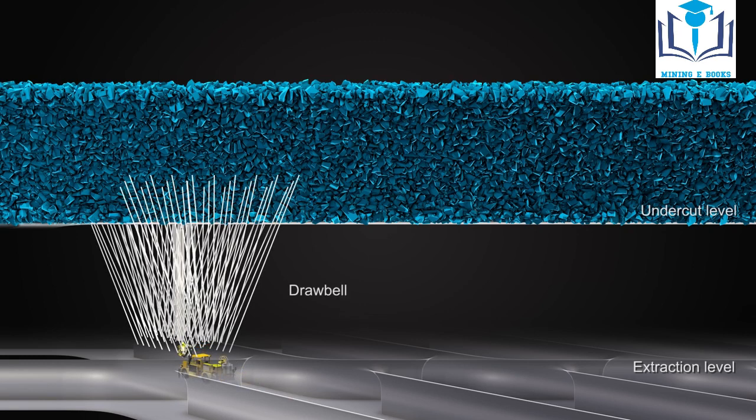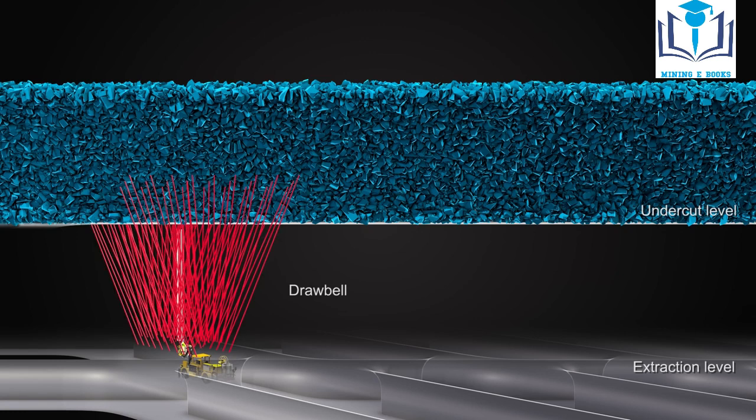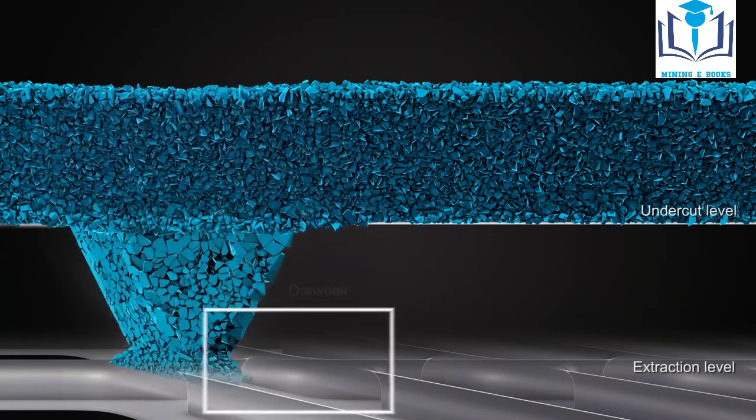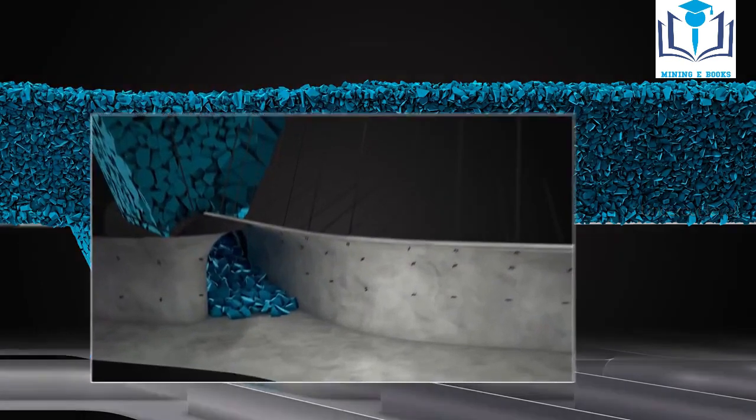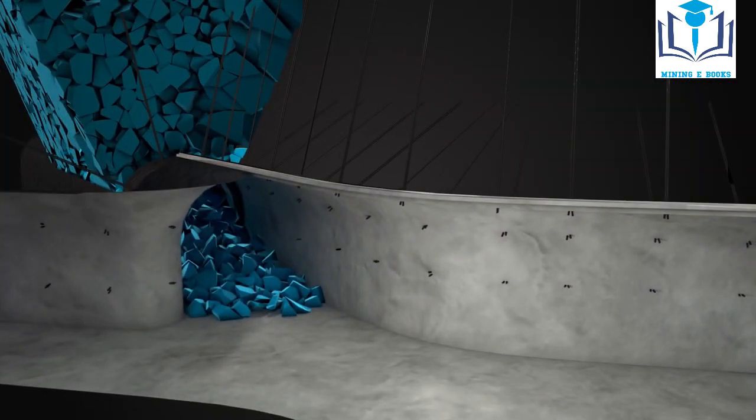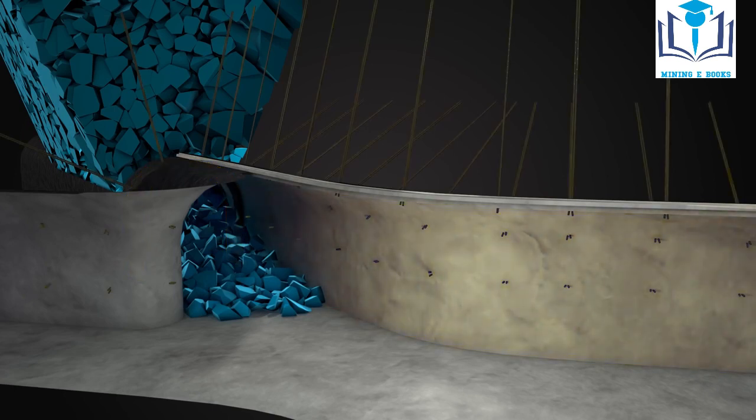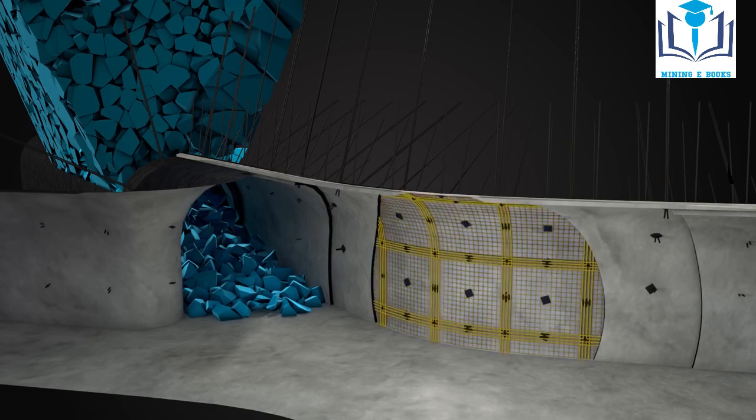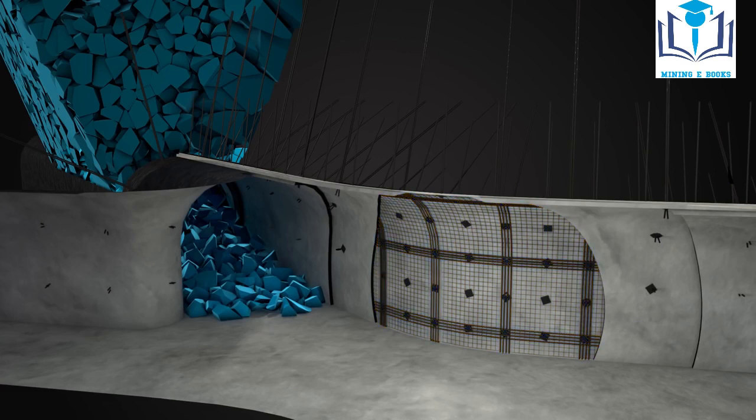Drawbells are created between undercut and extraction levels and become passages for caved rock. To avoid misfires, accurate drilling is crucial. Substantial rock reinforcement such as steel arches, sprayed concrete, cable bolts, rock bolts, steel mesh, and straps are usually required.